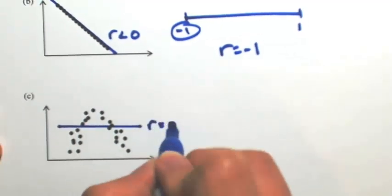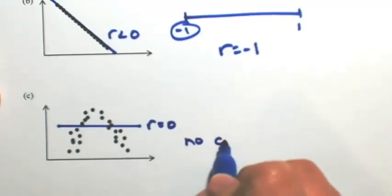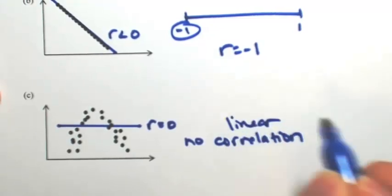So this r is actually equal to zero because there is no correlation. That should probably be specific here. There is no linear correlation.